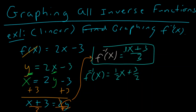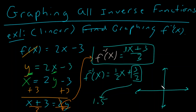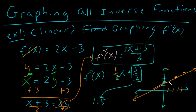A better way to graph this is to write it out as f inverse of x equals one-half x plus 3 over 2. That would be a lot easier to graph. Because we've graphed so many linear functions, 3 over 2 is another way of saying 1.5, so our y-intercept is 1.5. Our slope is 1 over 2, so we go up 1 and to the right 2, keeping it halfway between the tick marks. There is our f inverse of x.